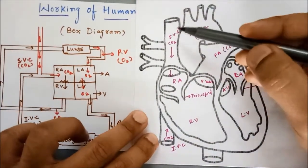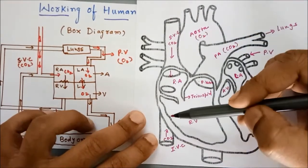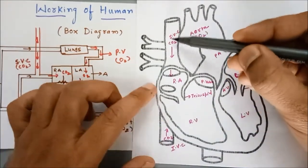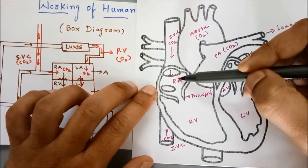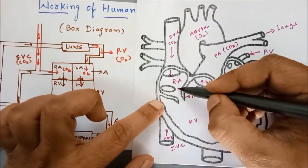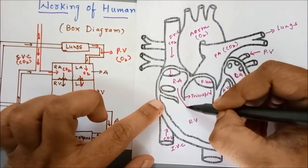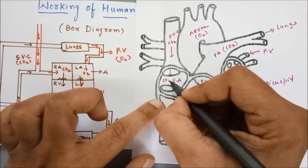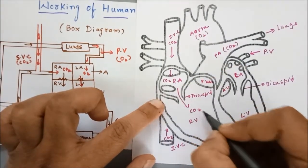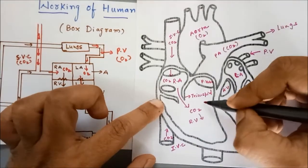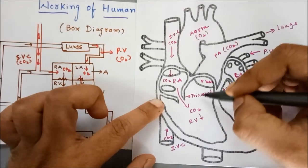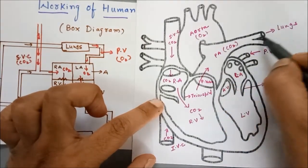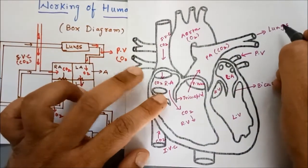To conclude: from the inferior vena cava and superior vena cava, the deoxygenated blood is brought into the right atrium. Then from here the deoxygenated blood is pushed in and reaches the right ventricle. From there it enters into the pulmonary artery, and from the pulmonary artery the deoxygenated blood goes to the lungs.